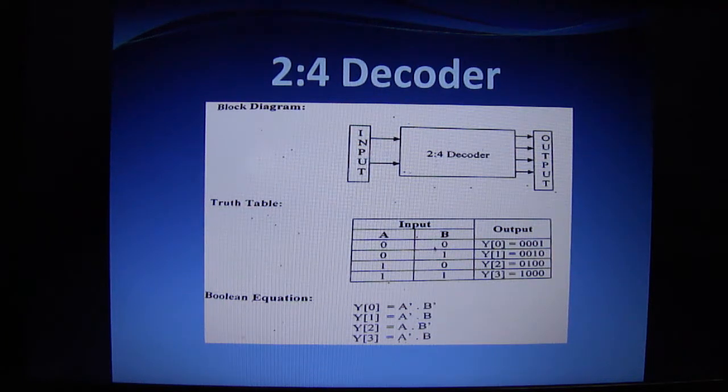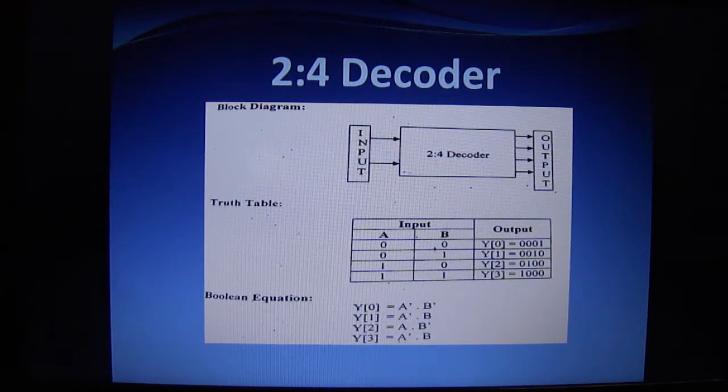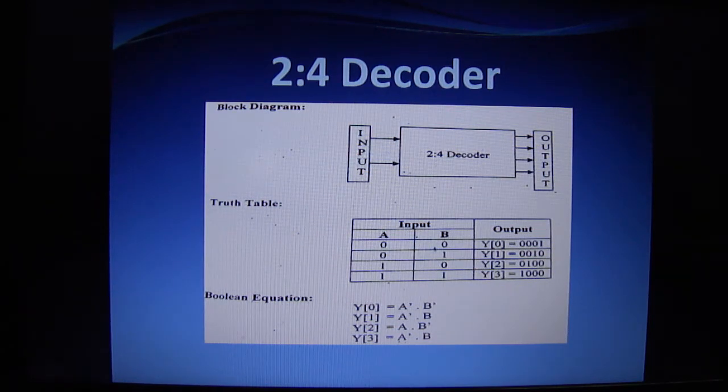When we look at the Boolean equations for this, when the output is y[0], your first output, the equation is A bar B bar. For the second output, the equation is A bar B.